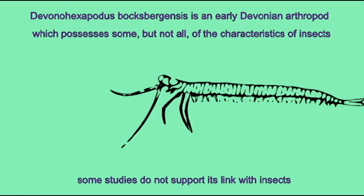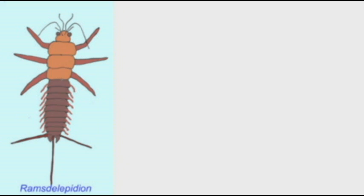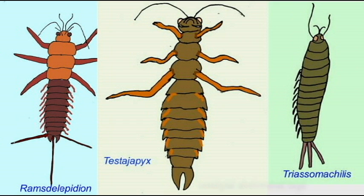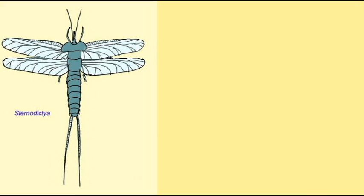Many of the early insects possessed primitive features that modern insects lack. For example, all at first were wingless. Many possessed abdominal legs — small legs on a series of abdominal segments — which the insects of today lack.